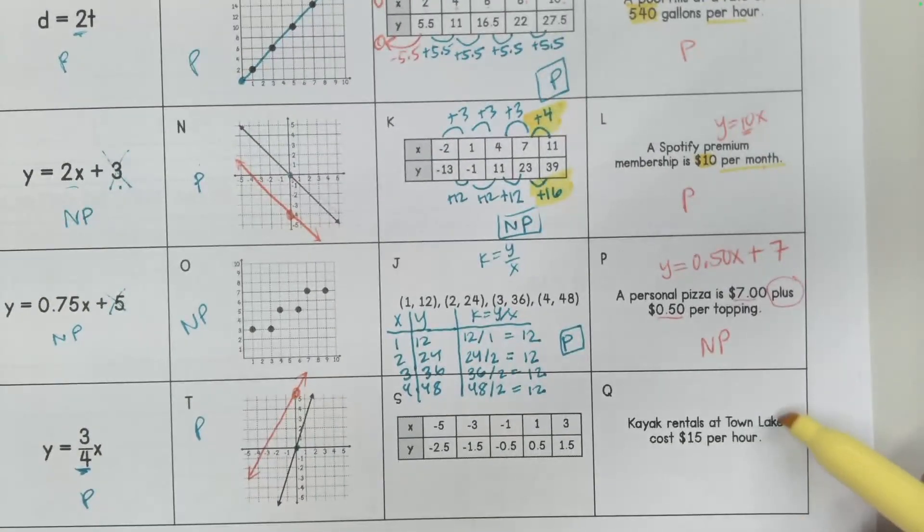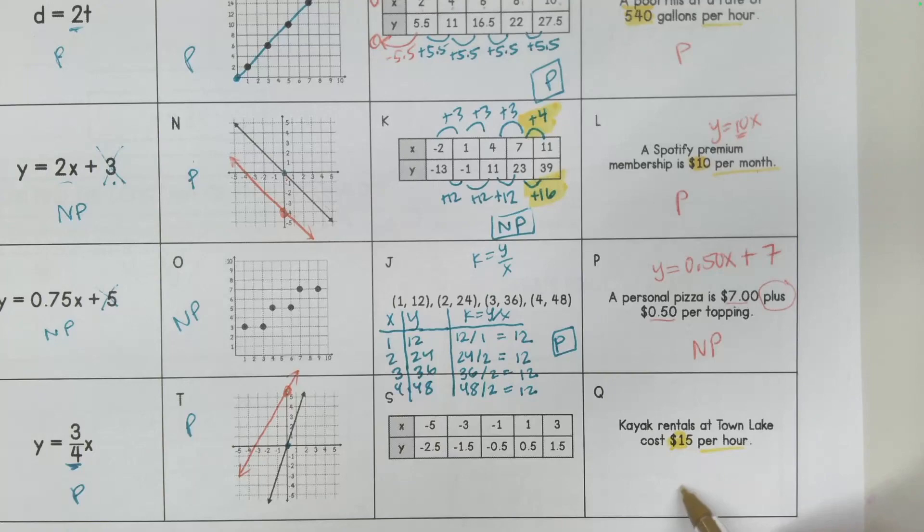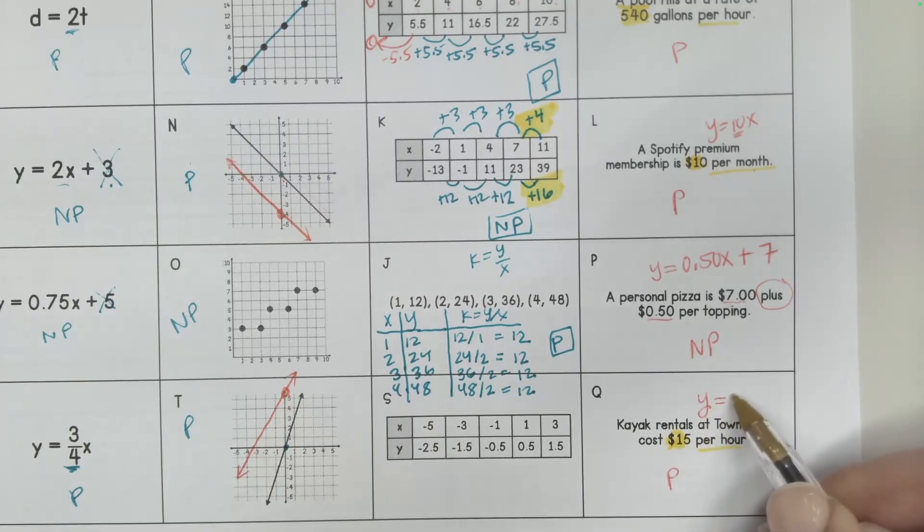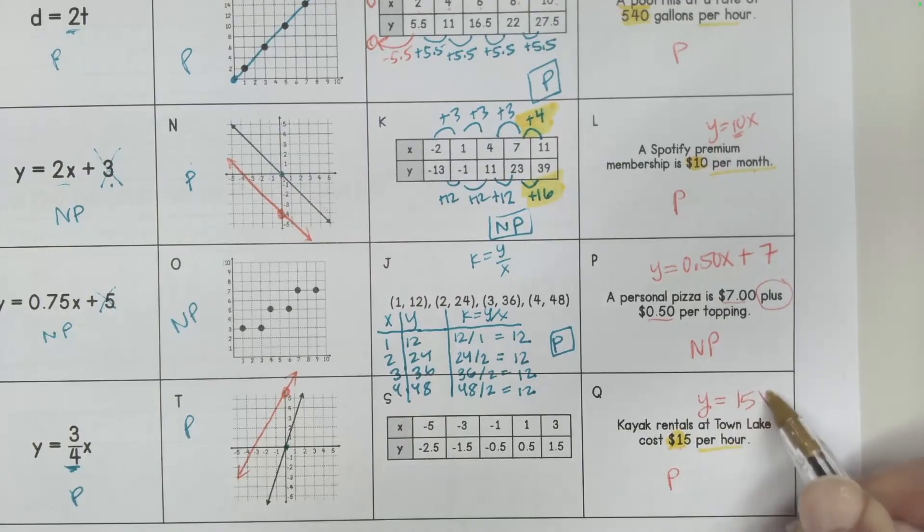Last one is a kayak rental at Town Lake cost $15 per hour. So again, this is proportional. And if you needed to make an equation out of it, it would be y is equal to 15x.